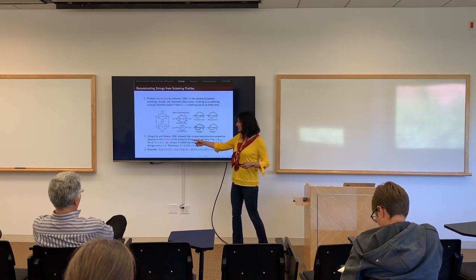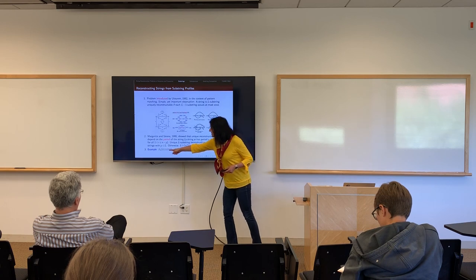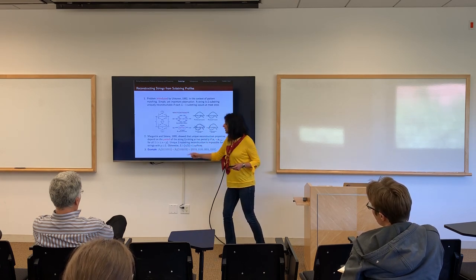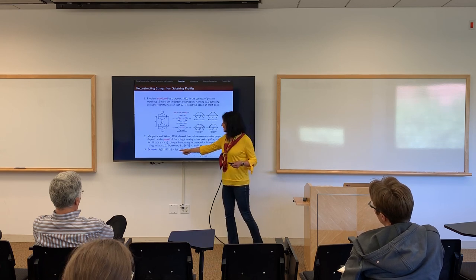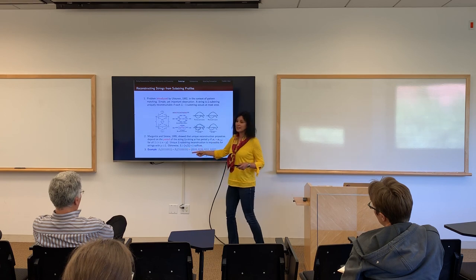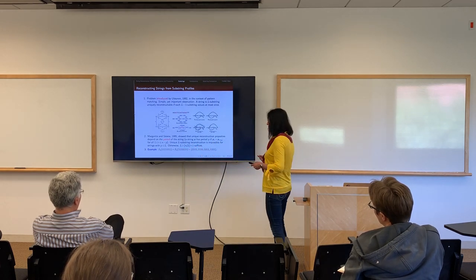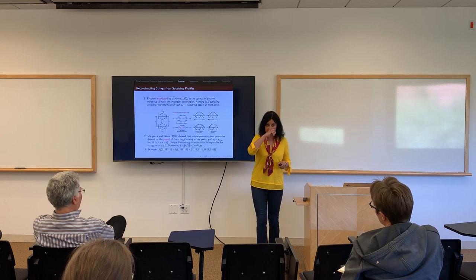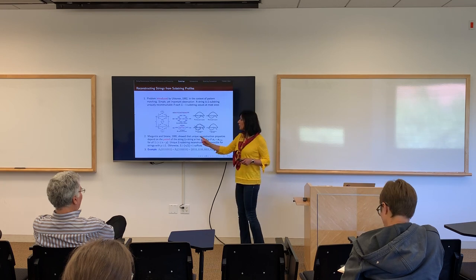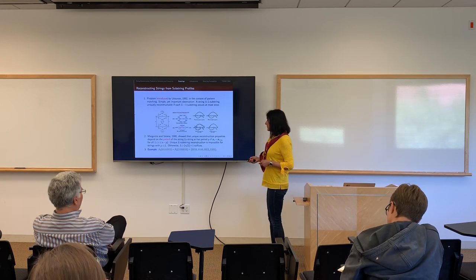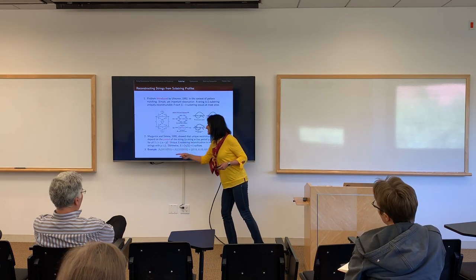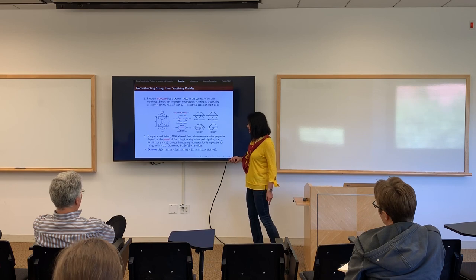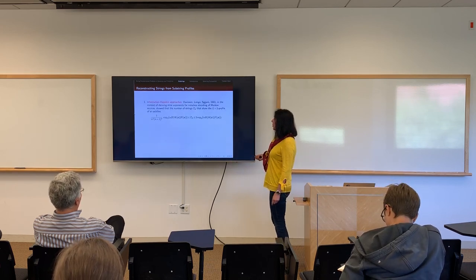Here is an example showing that the period can mess up unique reconstruction. A string with period four has a part that repeats itself. If I take all length-four substrings, I get the same multiset as for another different string — because when strings are periodic, you can change the order of the periodic pieces and still get the same substring spectra. So you don't want strings with small period; if the string is periodic, your substring length L must be less than the period for reconstruction to succeed.